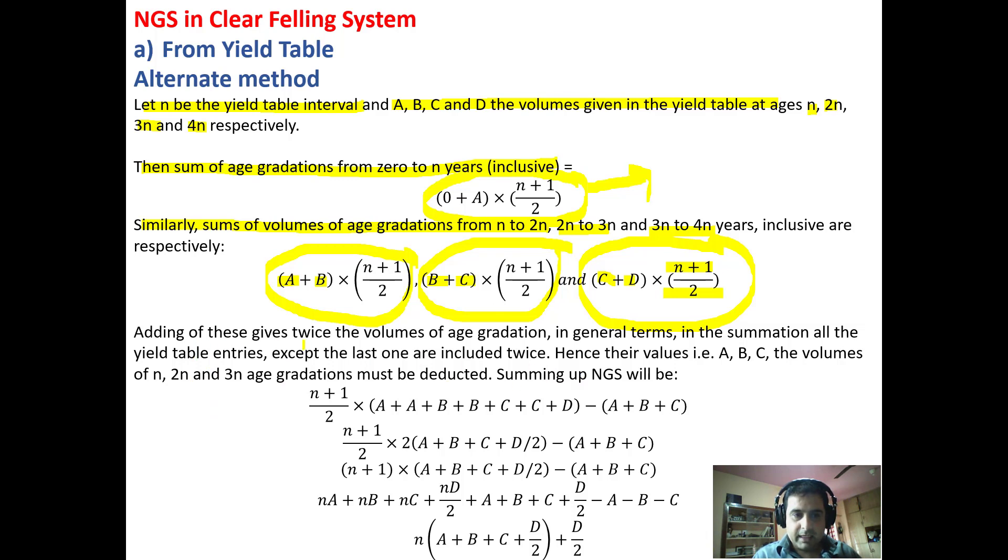So adding these gives twice the volumes of age gradations. In the summation all yield table entries are doubled except the last one. Hence the values A, B and C have to be subtracted. When we sum all these terms, we have common term (N + 1)/2. We will be left with 2A + 2B + 2C + D. So we subtract A + B + C because they are occurring twice, not D because that is occurring only once.